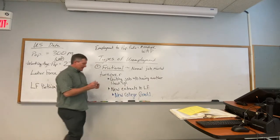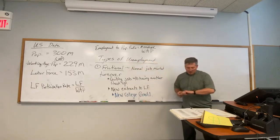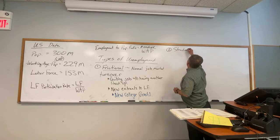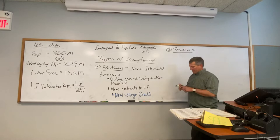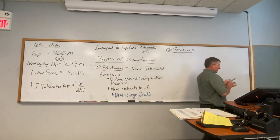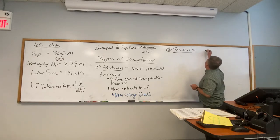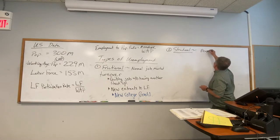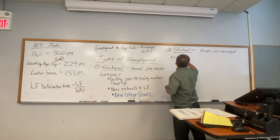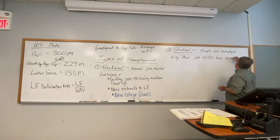We kind of expect an economy to have some unemployment, and that's why we didn't want it to be zero — especially with this type. Number two: structural unemployment. Structural unemployment occurs when job skills don't match up with job requirements. Maybe there's been a technological change and you are out of a job. People are unemployed because their job skills have become obsolete.